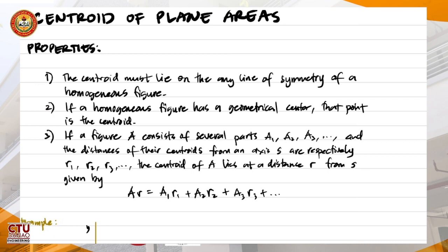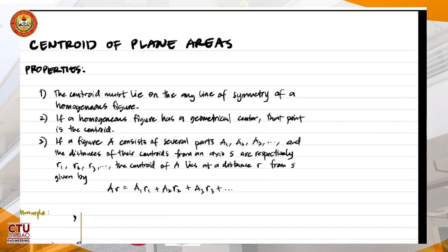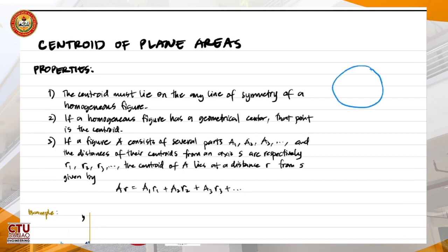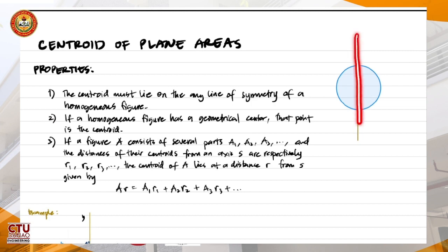If a figure has a line of symmetry, or is symmetrical at a certain axis or line, then the centroid lies on that line. For example, a circle — the line of symmetry passes right through the center. The centroid is located at the intersection of the vertical and horizontal axes of symmetry.